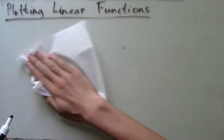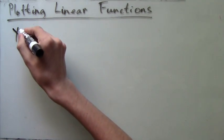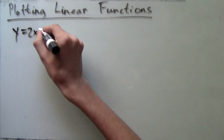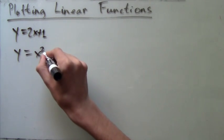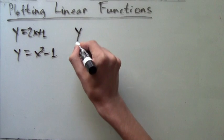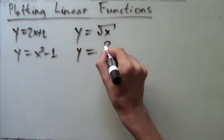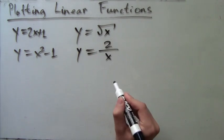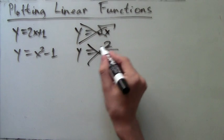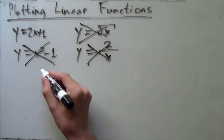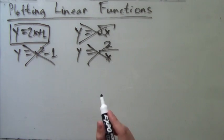Now I'll write down four more functions, some of which are linear but some that aren't. Here's the first function, y=2x+1. Second one is y=x²-1. Next, we have y=√x, and the last one is y=2/x. The only linear function is y=2x+1 because it has x times a number plus some other number.